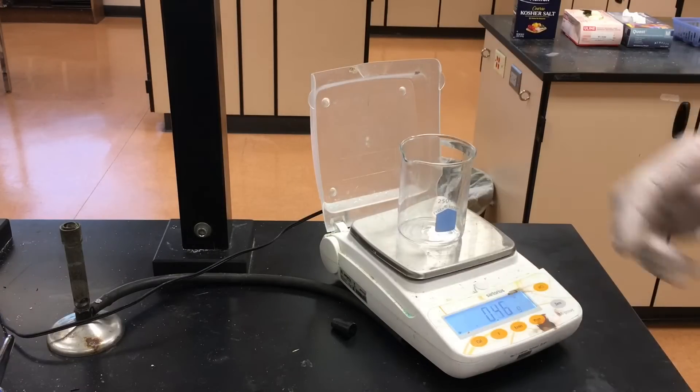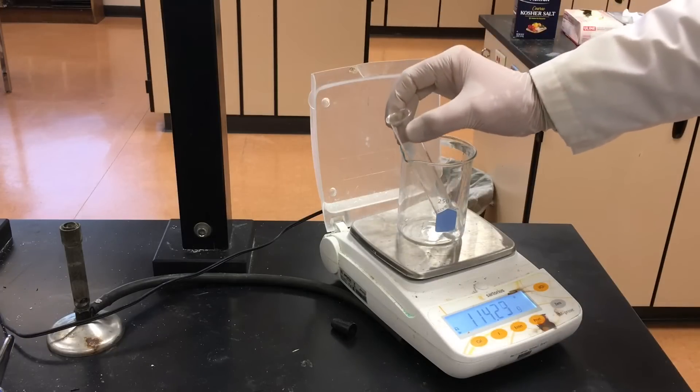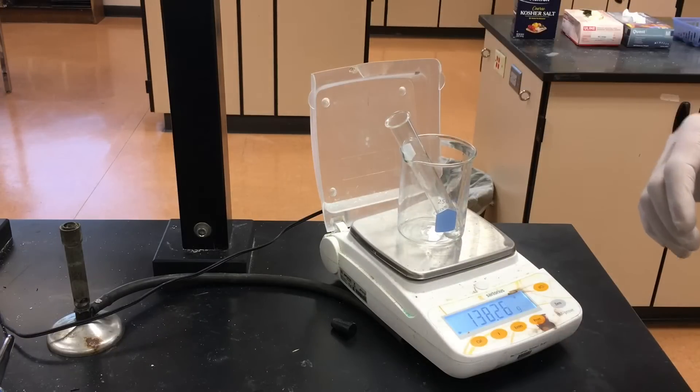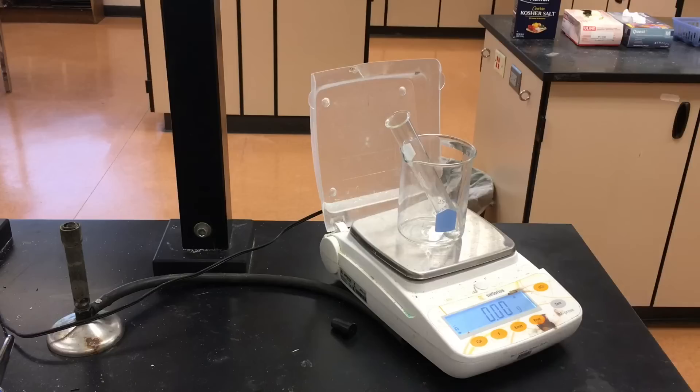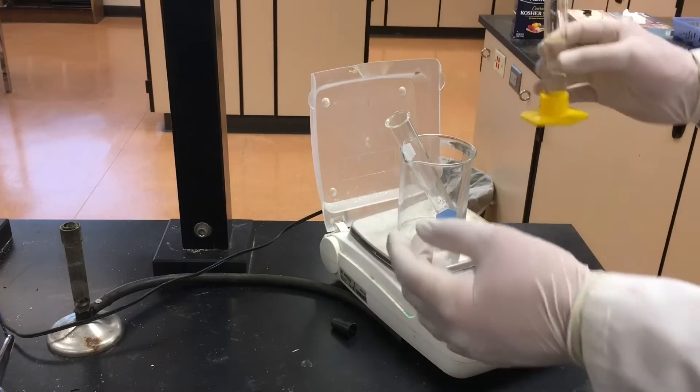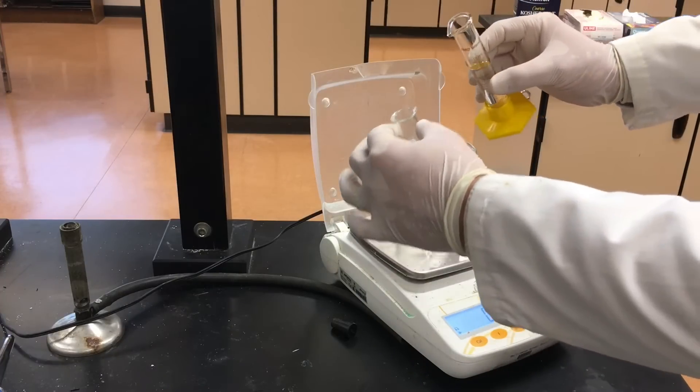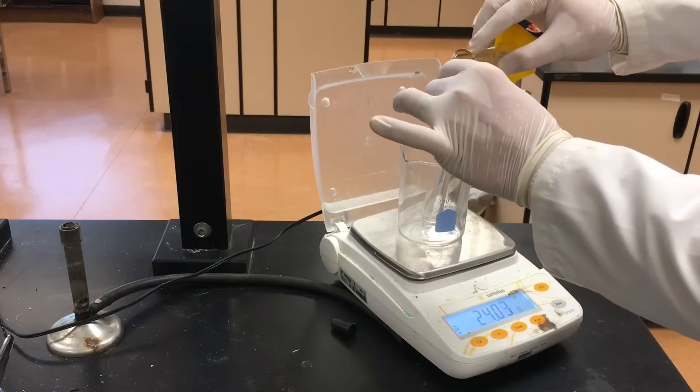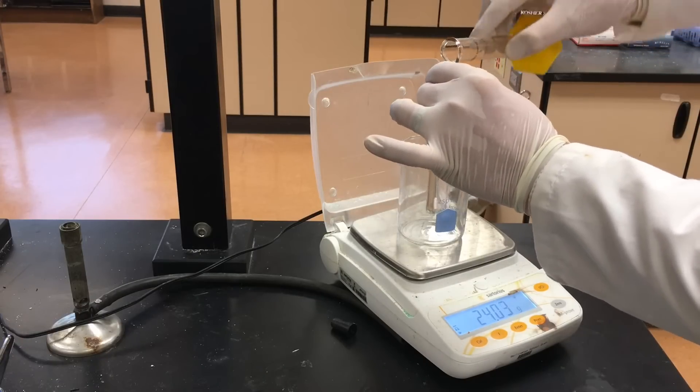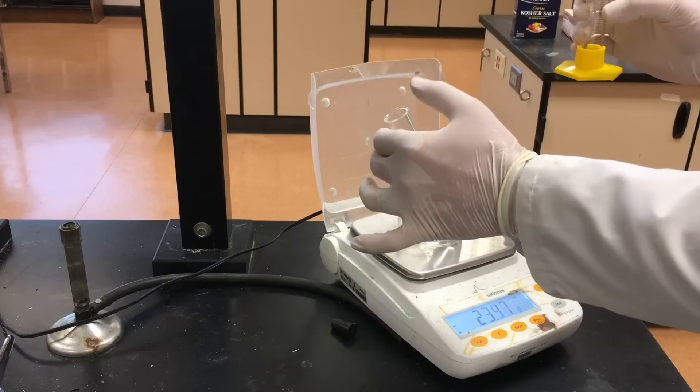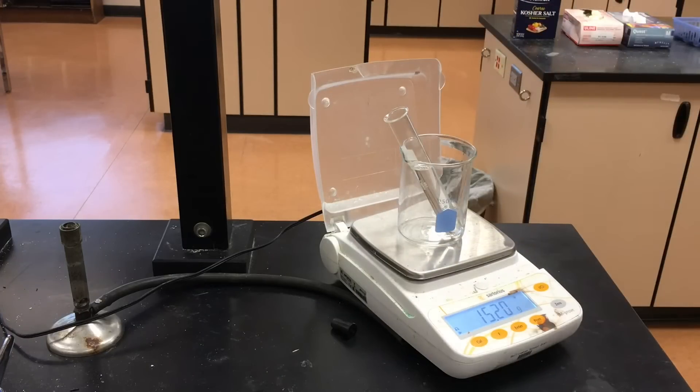Now it's important to know also exactly how much cyclohexane we have. We measured 20 milliliters, but we need a more accurate reading than that. So we're gonna put 20 milliliters in a large test tube and we're gonna take the mass. 15.20.